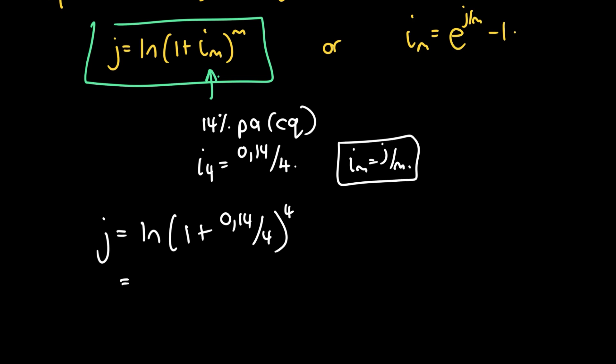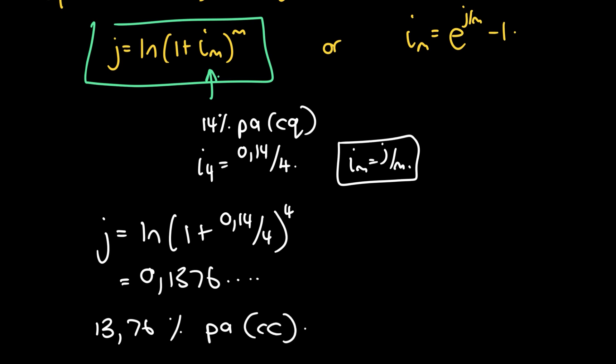So J = ln(1 + 0.14/4)^4, because 4 is the number of compounding periods presented to us. Putting that into the calculator gives 0.1376. If you want it in percentage notation, the final answer is 13.76% per annum continuously compounded — we simply multiplied 0.1376 by 100 to express it as a percentage.